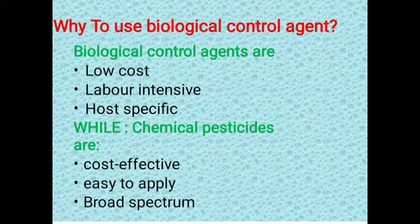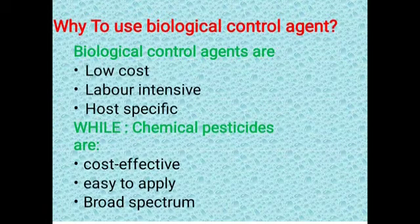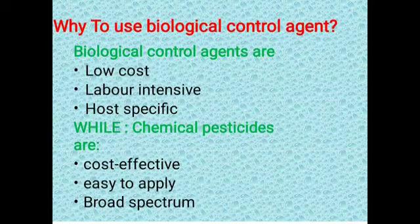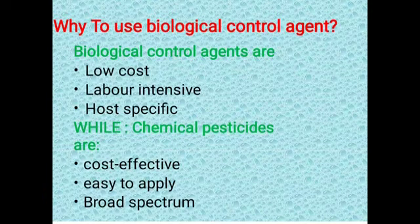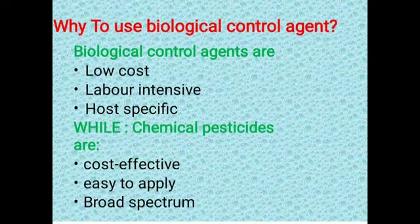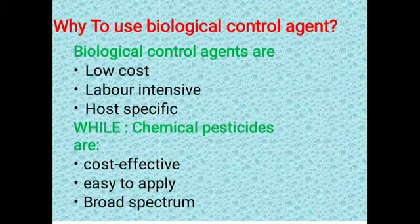Why use biological control agents? Biocontrol agents are low in cost and do not require much labor. They are host-specific. Chemical pesticides, though cost-effective and easy to apply with broad-spectrum control of different diseases, have ill effects on the environment and human health. That is why biocontrol agents are used instead. When we use biocontrol agents, it requires more time, but the results obtained are better compared to residues left by chemical pesticides.